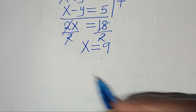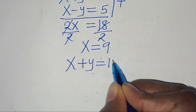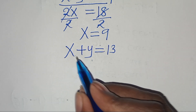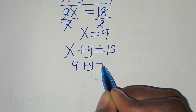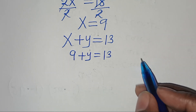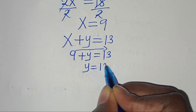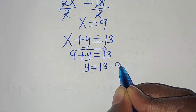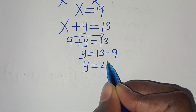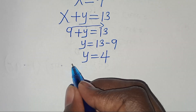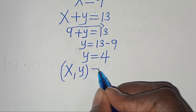With x equal to 9, we substitute into x plus y equals 13, giving 9 plus y equals 13. Taking 9 to the right-hand side, y equals 13 minus 9, which equals 4. So the solution for case 2 is (x, y) = (9, 4).